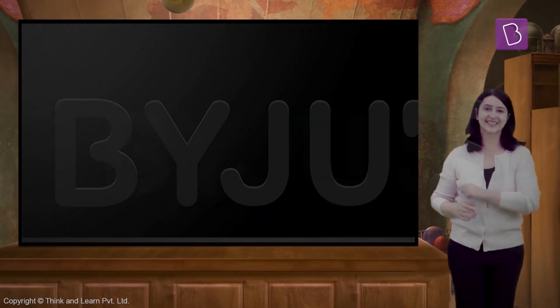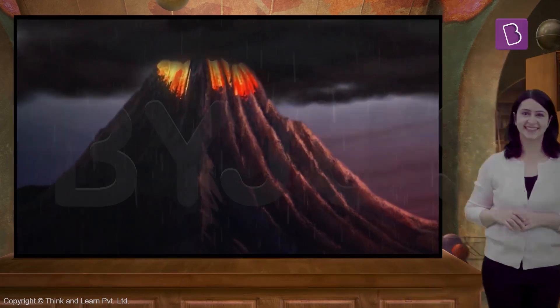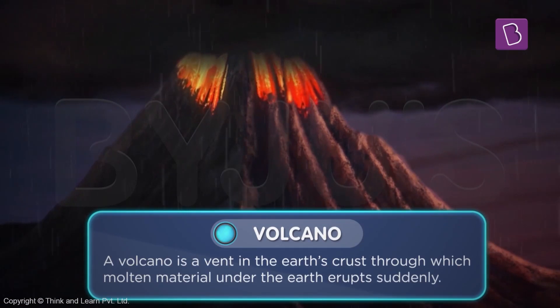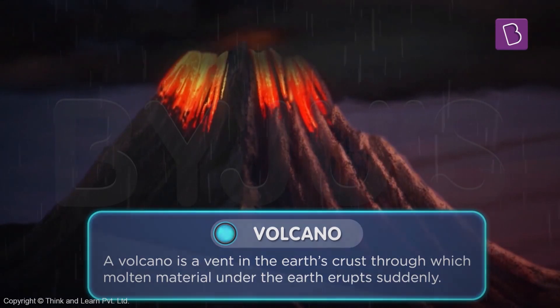Do you know that there are openings on the earth's surface that act as pressure vents? Yes, I'm talking about volcanoes. A volcano is a vent in the earth's crust through which molten material under the earth erupts suddenly.